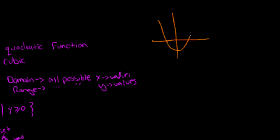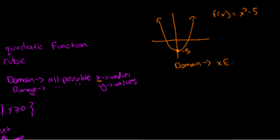Now let's try a different one: f of x is equal to x squared minus 5. The minimum point here is negative 5. What is the domain? The domain is the same as before — it continues on to infinity in both directions, so x is all real numbers. The range: the minimum is negative 5 and it continues on and on, so y is all real numbers such that y is greater than or equal to negative 5.